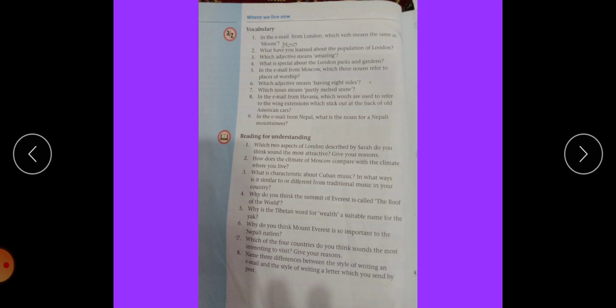The adjective astounding means same as amazing. What is special about the London parks and green gardens? Students, we have learned about London parks and gardens. London has beautiful parks and gardens where people can relax beside a lake or upon. There is an astounding variety of trees in London green spaces which blossom in the spring and turn gold and red in the autumn.